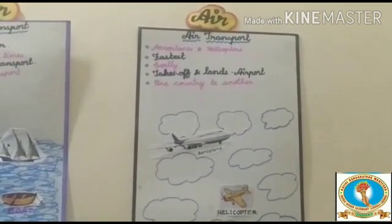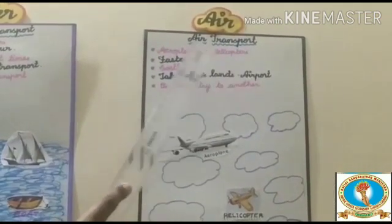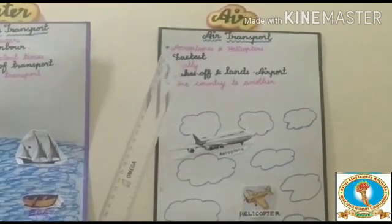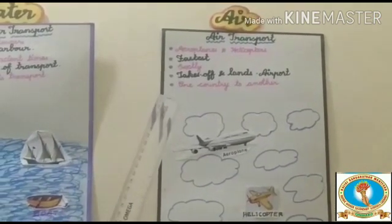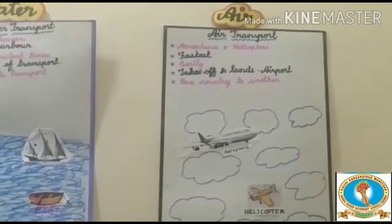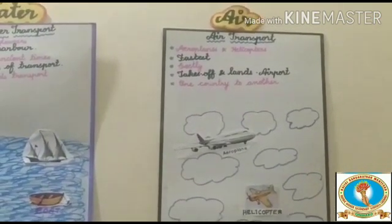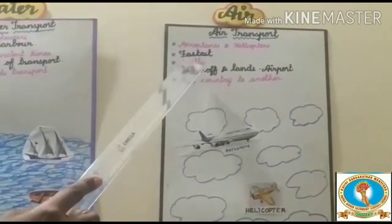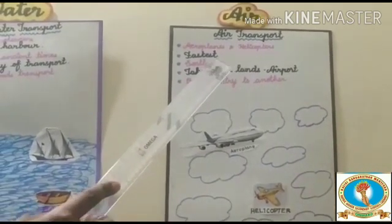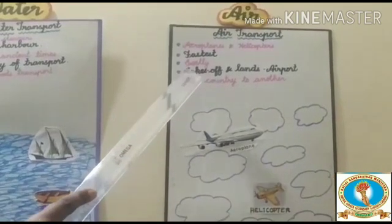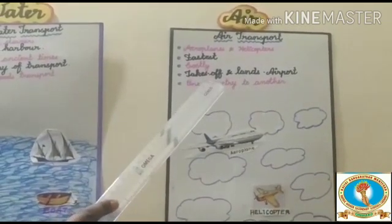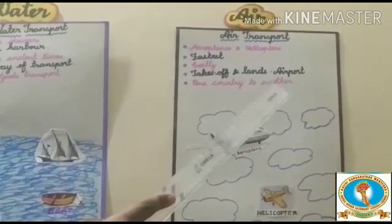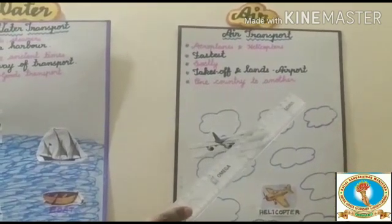Now the third one — air transport. Air transport is also called airways. Aeroplanes and helicopters are the examples of air transport. They are the fastest means of transport, but it is expensive.